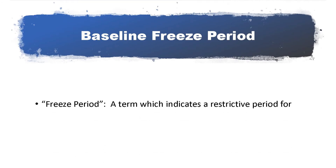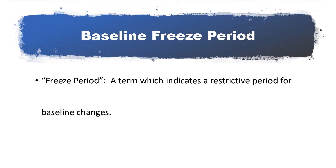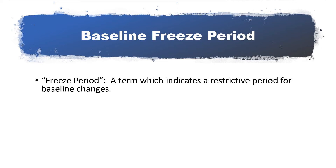The Performance Measurement Baseline, or PMB, represents the time-phased plan against which performance is measured. For this measurement to provide meaningful information which can be used for decision-making, it must directly tie to the authorized scope of work and represent the current execution plan for the project. Having a disciplined change control process helps to ensure that these goals are met.